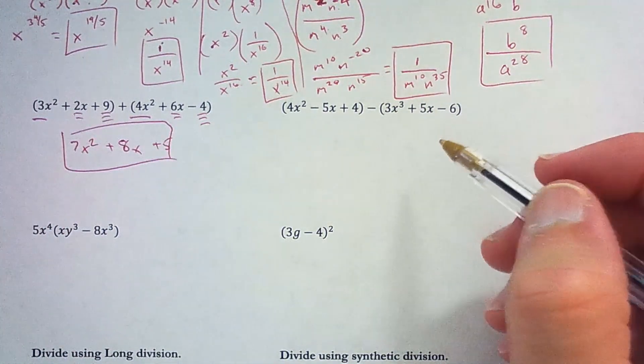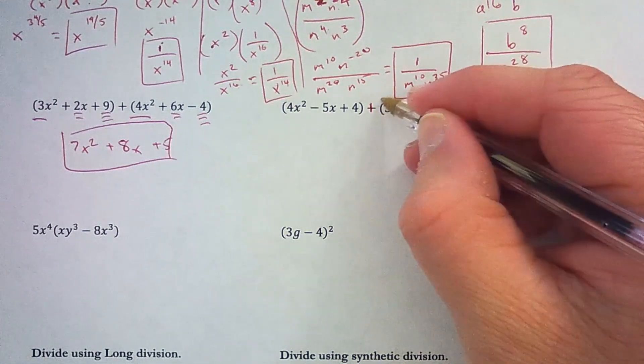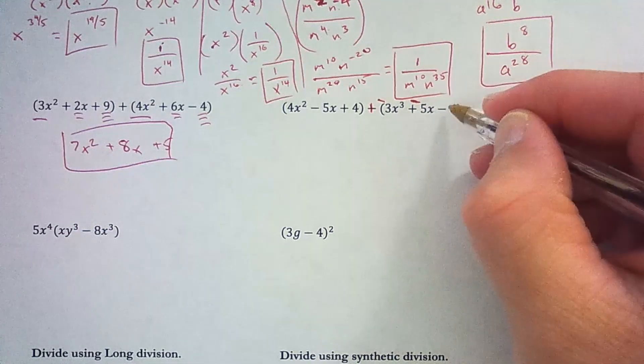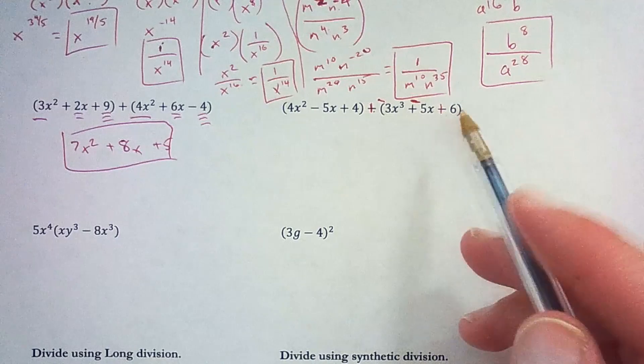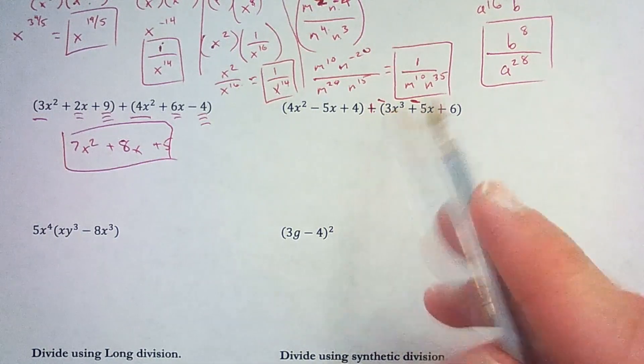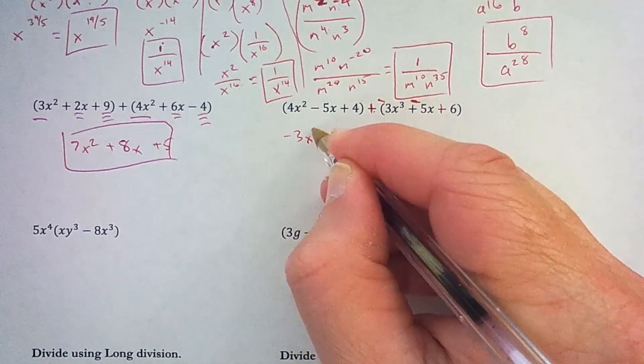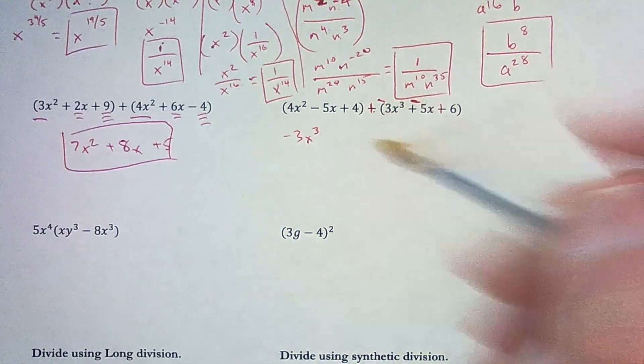Next we will subtract. When I subtract, I like to just make it adding all the opposites. So I'm adding, and then the opposite of what was here. So I have a negative 3x cubed. That's going to be my first term. Then I have 4x squared, and it doesn't combine with anything here.